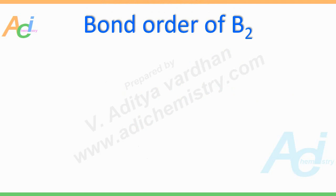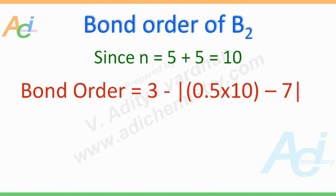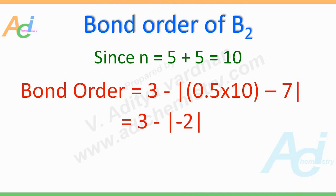Another example: the bond order of the B₂ molecule. B is boron, and there are 5 electrons in each boron atom. So the total number of electrons in the B₂ molecule is equal to 10. Just plug in this value. You get minus 2 within the modulus, so just take the value 2, not minus 2. You have to do 3 minus 2, which equals 1. So the bond order of B₂ molecule is 1. Very simple!